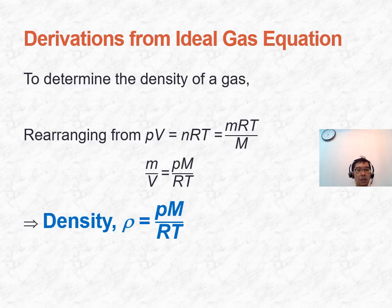For further derivations: density equals mass divided by volume, so density equals pressure times molar mass divided by R and T.